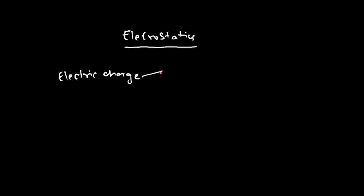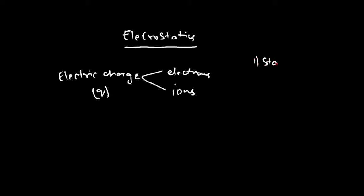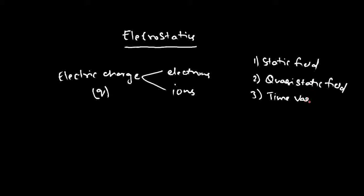Charge constitutes of a group of electrons or ions. We denote this electric charge as Q. So this is the charge that is going to produce electric field and we are trying to understand the properties of the field produced by this charge. In general, the field produced by this charge can be categorized into three types: static field, quasi-static field, and time-varying or dynamic field. These are the three types of fields that can be generated by electric charge Q.